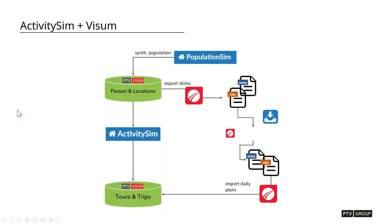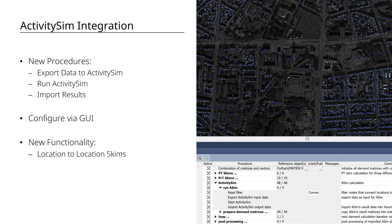The interface comes in the form of three new procedures: export data to ActivitySim, run ActivitySim, and import results back into Vezoom. You can see where those procedures are in the screenshot on the right. They're all configured through the graphical user interface — less messing around with text configuration files. If you download version 2023, there's a new example file called "demand ActivitySim" that shows what this looks like, containing all the input and output data.